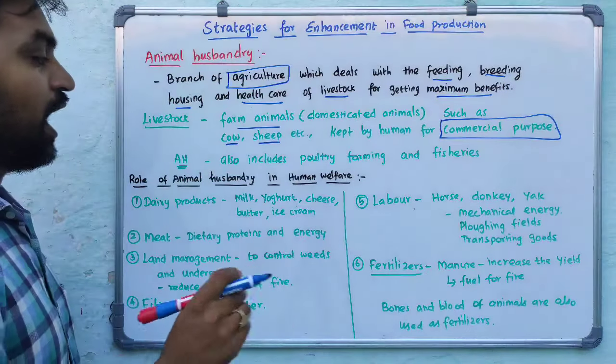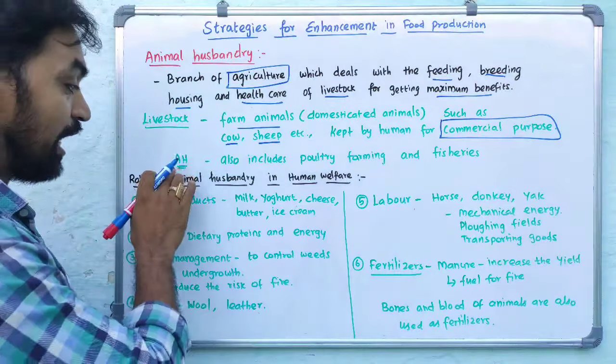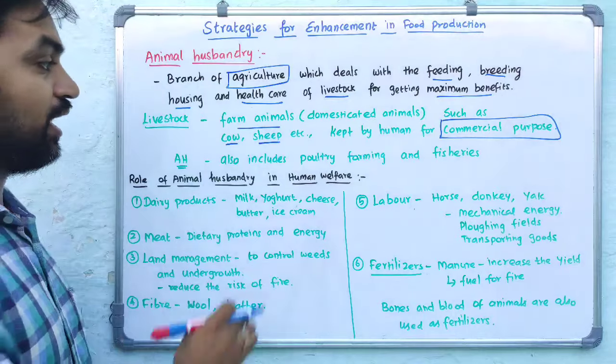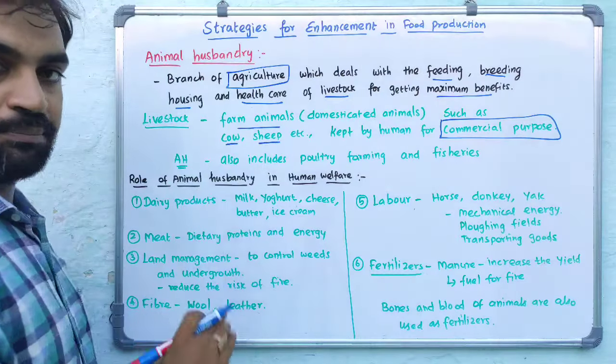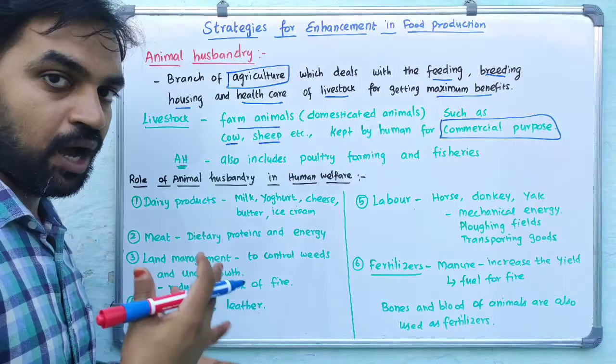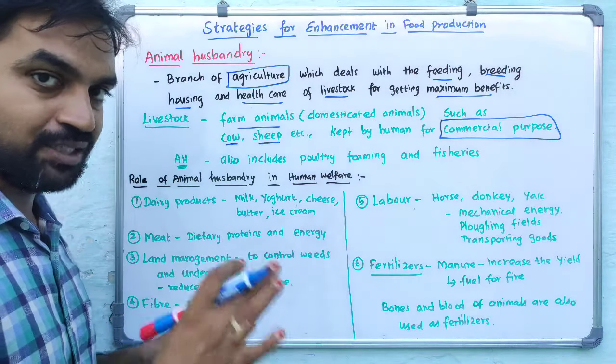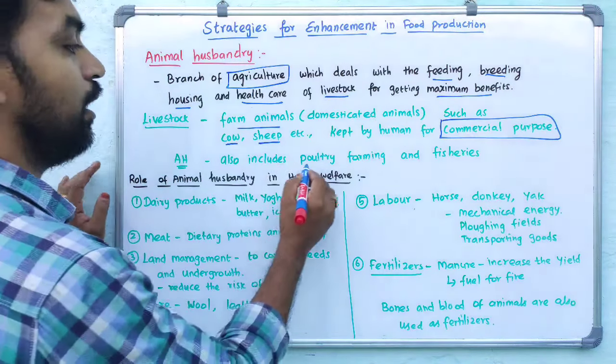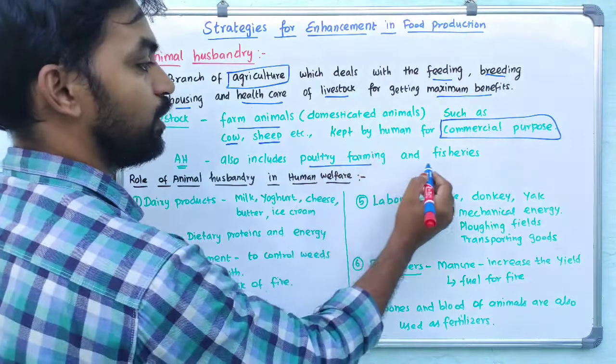These animals are used for commercial purposes. Animal husbandry covers not only cow and sheep, but also many other animals. This also includes poultry farming.